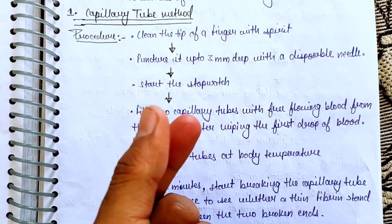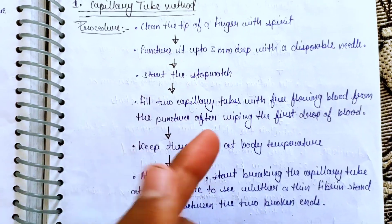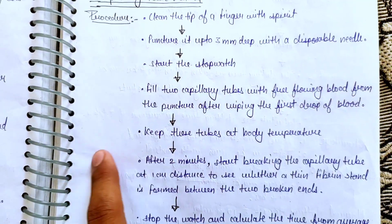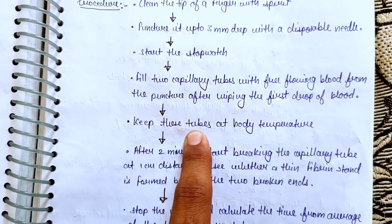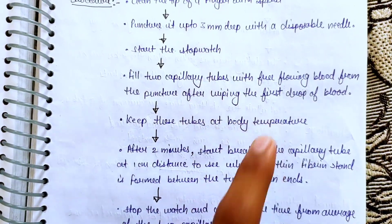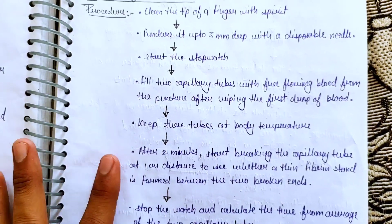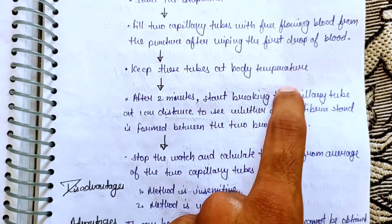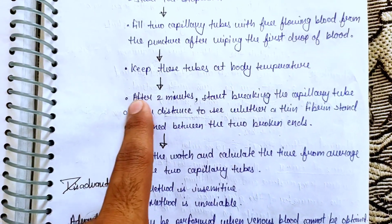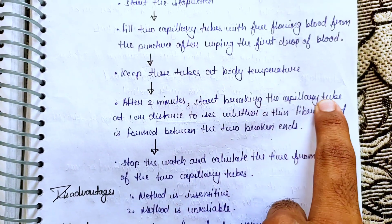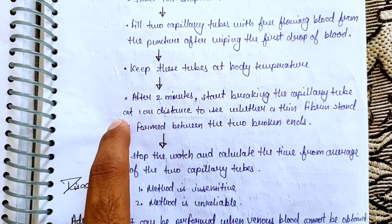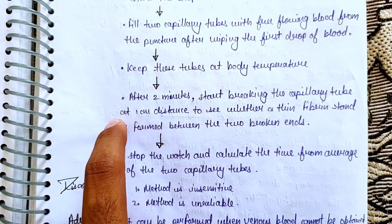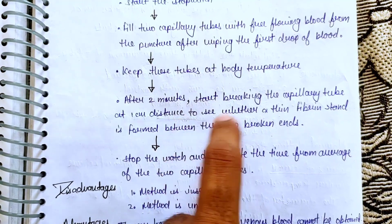After collecting the blood in the capillary tubes, keep the tubes at room temperature or body temperature. After 2 minutes, start breaking the capillary tube at 1 centimeter intervals.